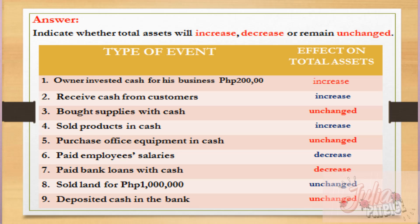Number six: paid employees' salaries. We need to pay our employees, so the cash of the business decreased. Therefore the effect on total assets is decrease, because cash was used for the payment. Number seven: paid bank loans with cash. The cash decreased again — it went to the bank to pay the debt. This was not converted into another asset; the money actually left the business. So the effect is decrease in total assets.